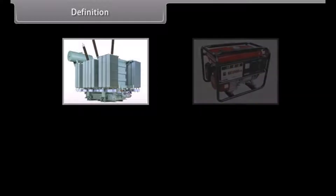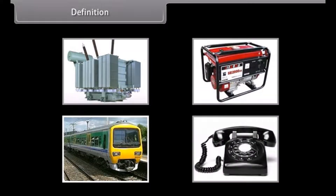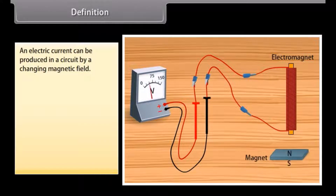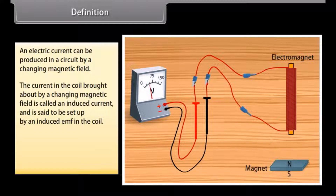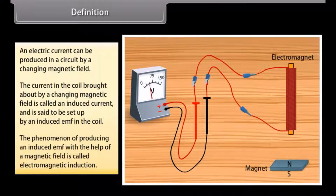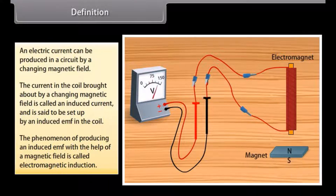In our everyday life, electromagnetic induction plays a vital role. Transformer, generator, train, and telephone are some examples which work on the principle of electromagnetic induction. An electric current can be produced in a circuit by a changing magnetic field. The current in the coil brought about by a changing magnetic field is called an induced current and is said to be set up by an induced EMF in the coil. The phenomenon of producing an induced EMF with the help of a magnetic field is called electromagnetic induction.